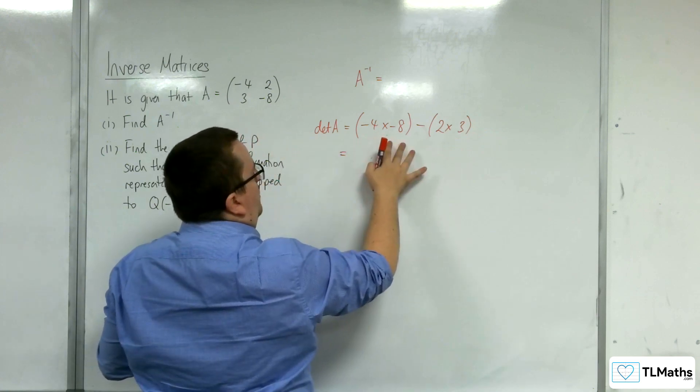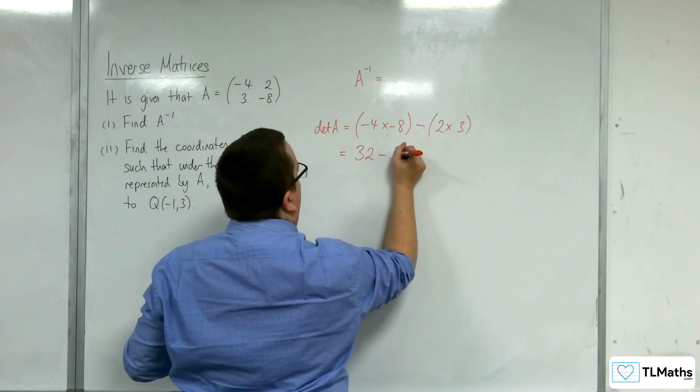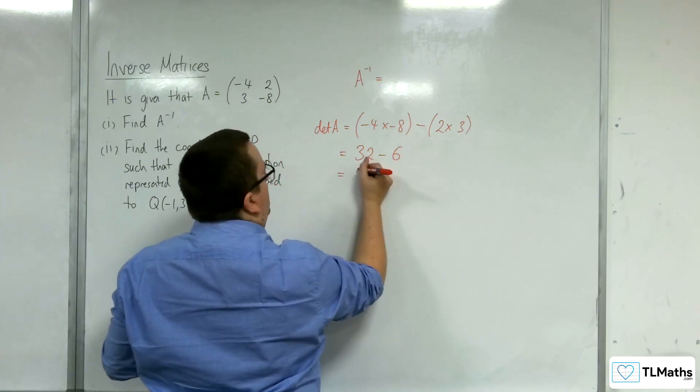So, minus 4 times minus 8 is 32, and we're going to take away 6, and so we're going to have 26.